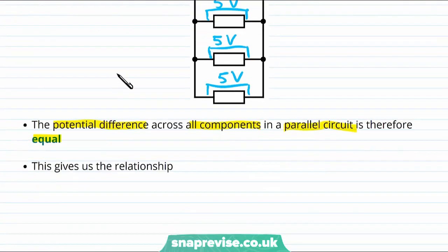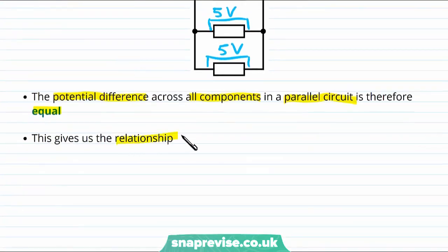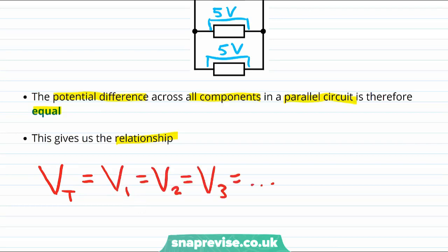This interesting fact gives us the following simple relationship. The total potential difference, that is the potential difference delivered by the cell, is equal to the potential difference dropped across any one of the components. When I write V1, what I mean is the potential dropped across the first component.